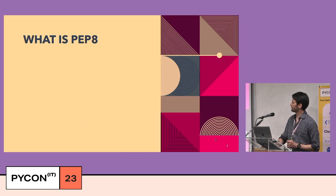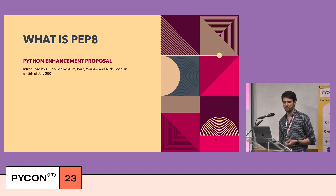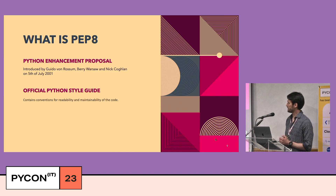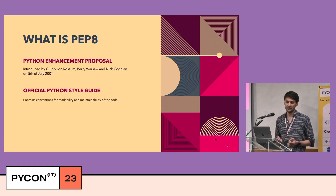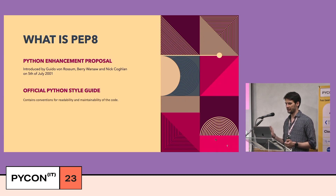But have you wondered what rules should be followed to have code looking like the gentleman's instead of the hooligan's? These rules are in PEP8. PEP8 stands for Python Enhancement Proposal, introduced by Guido van Rossum, Barry Warsaw, and Nick Coghlan on the 5th of July 2001. This is the official Python style guide — it lays out conventions and best practices aimed at making your code more readable, maintainable, and consistent.